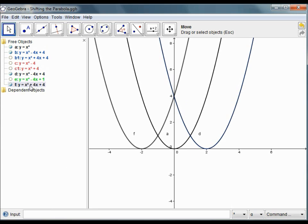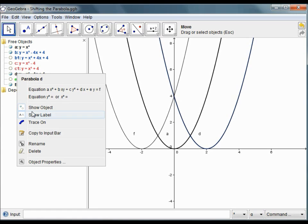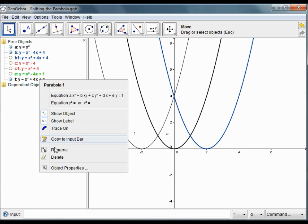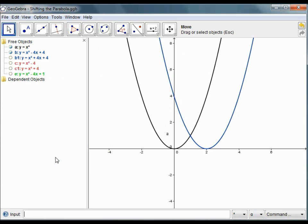So equation F, where y equals x squared plus 4x plus 4. Now I'll just get rid of those two equations we've written lately, so that our graph doesn't look too crowded.